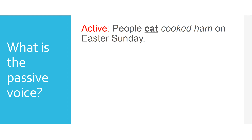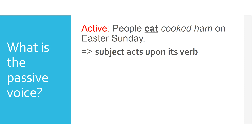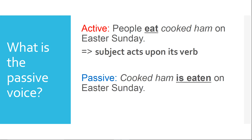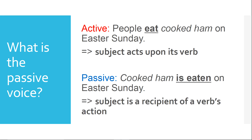An active sentence, for example, is: 'People eat cooked ham on Easter Sunday.' In an active sentence, the subject does the action — the subject acts upon its verb. Here we have 'people,' and people eat ham. On the other hand, in a passive sentence, the same thing is said differently: 'Cooked ham is eaten on Easter Sunday.' In a passive sentence, the subject — here it is 'cooked ham' — isn't doing anything. The subject is receiving the action; it is a recipient of the verb's action. It is not the ham that is eating — ham is eaten on Easter Sunday.